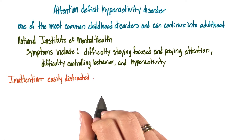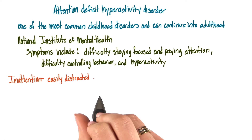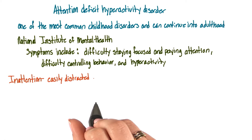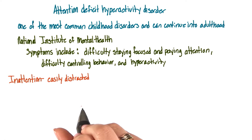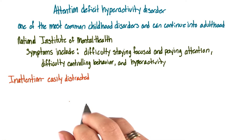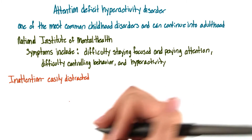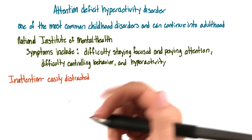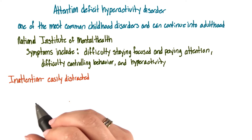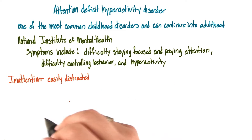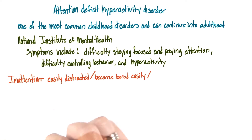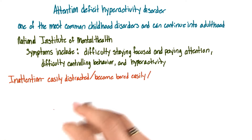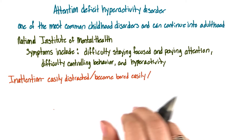Let's look at three types of symptoms. First, we have inattention. Someone who has symptoms of inattention can be easily distracted. They may miss details or forget things, and they frequently switch from one behavior or activity to another. They can become bored with a task after only a few minutes, unless they are doing something that they really enjoy.